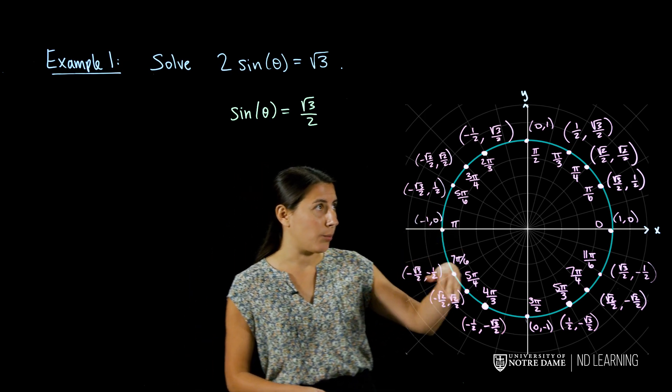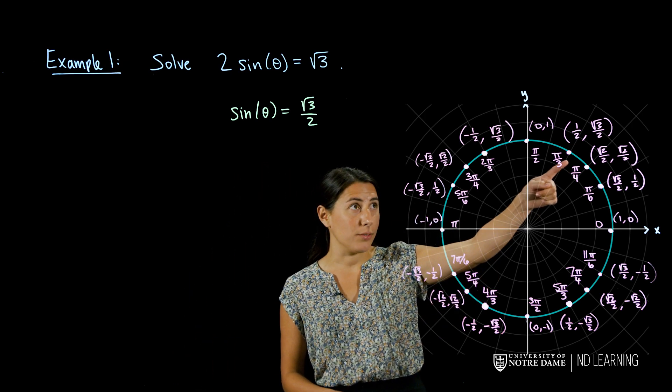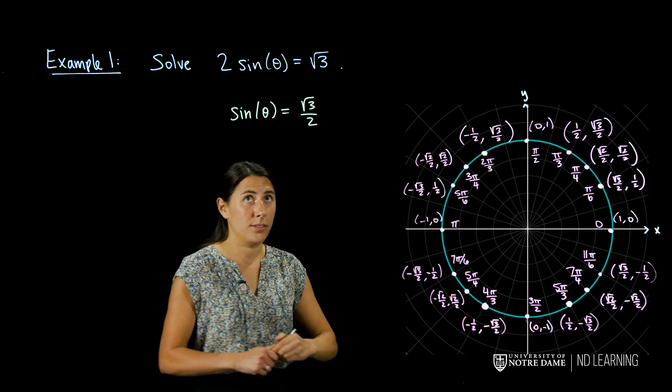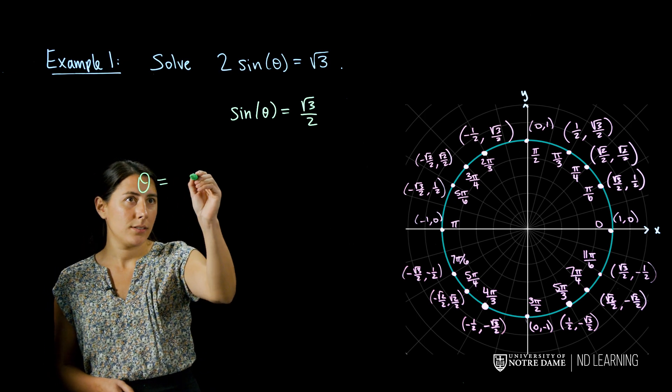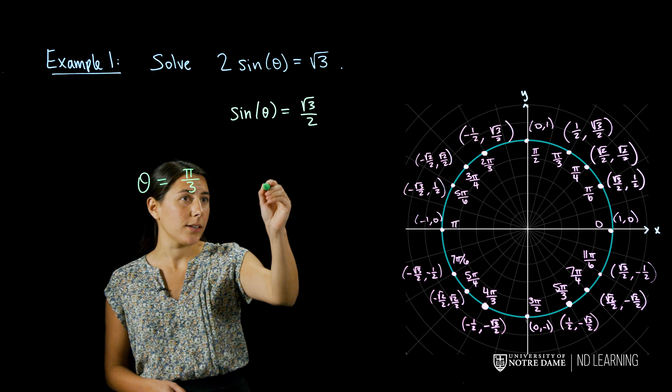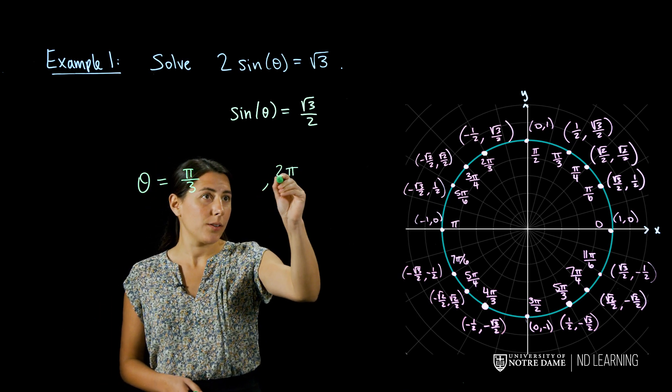So going from 0 to pi, that looks like it happens at pi over 3 and also 2 pi over 3. So theta could be pi over 3 or 2 pi over 3.